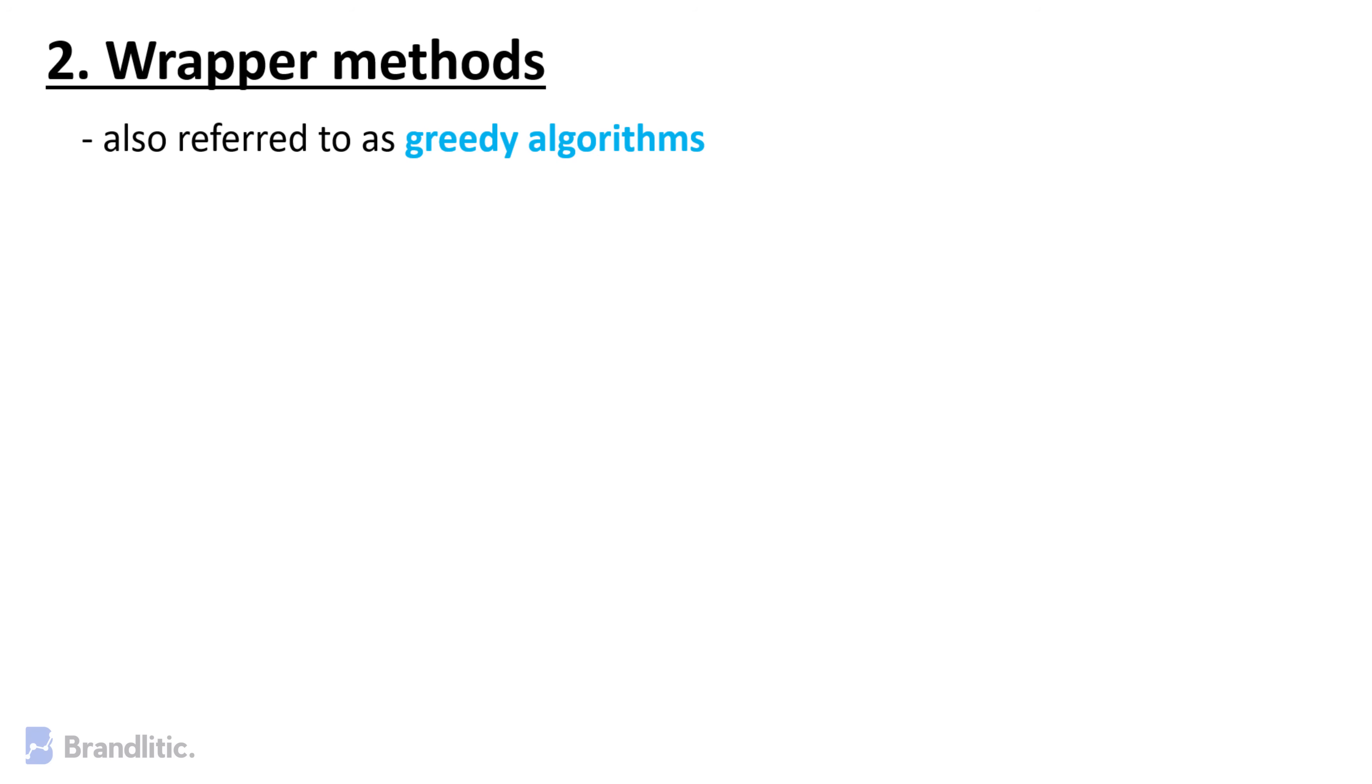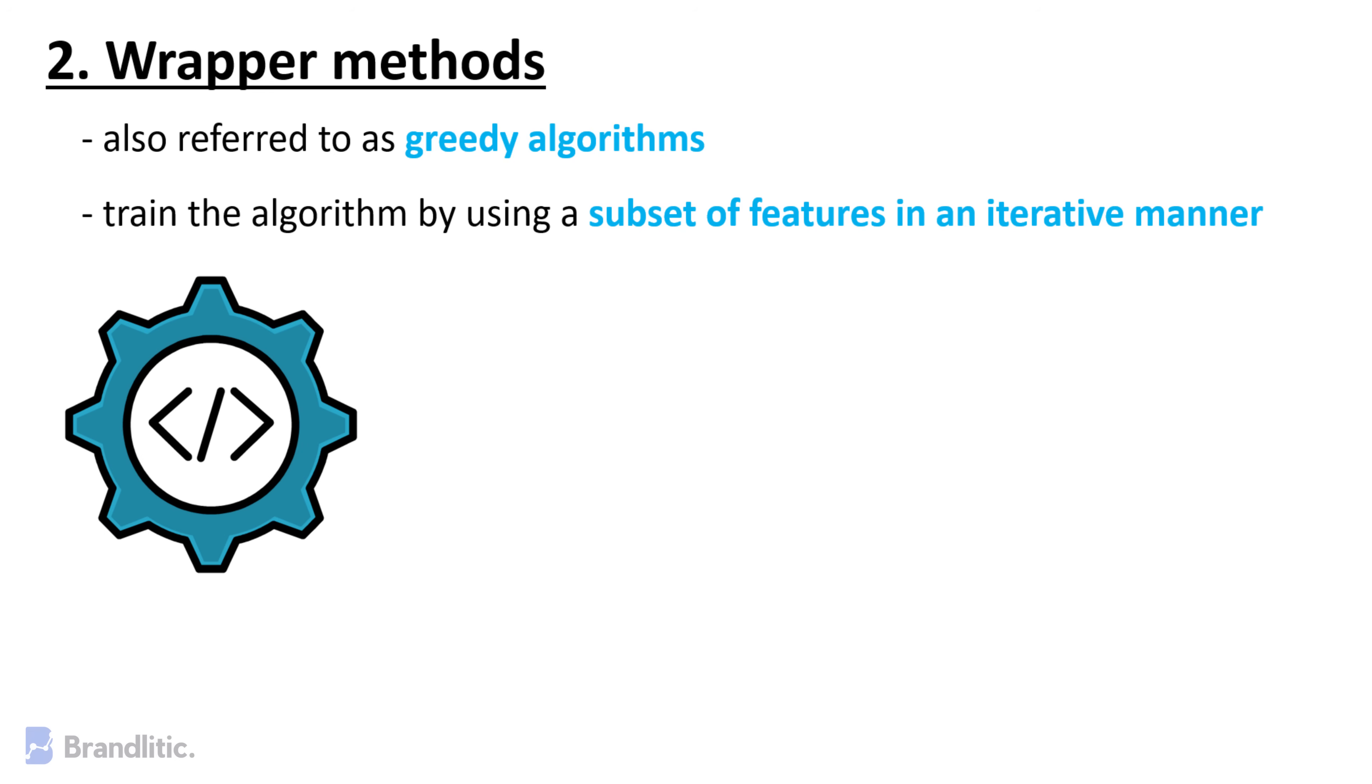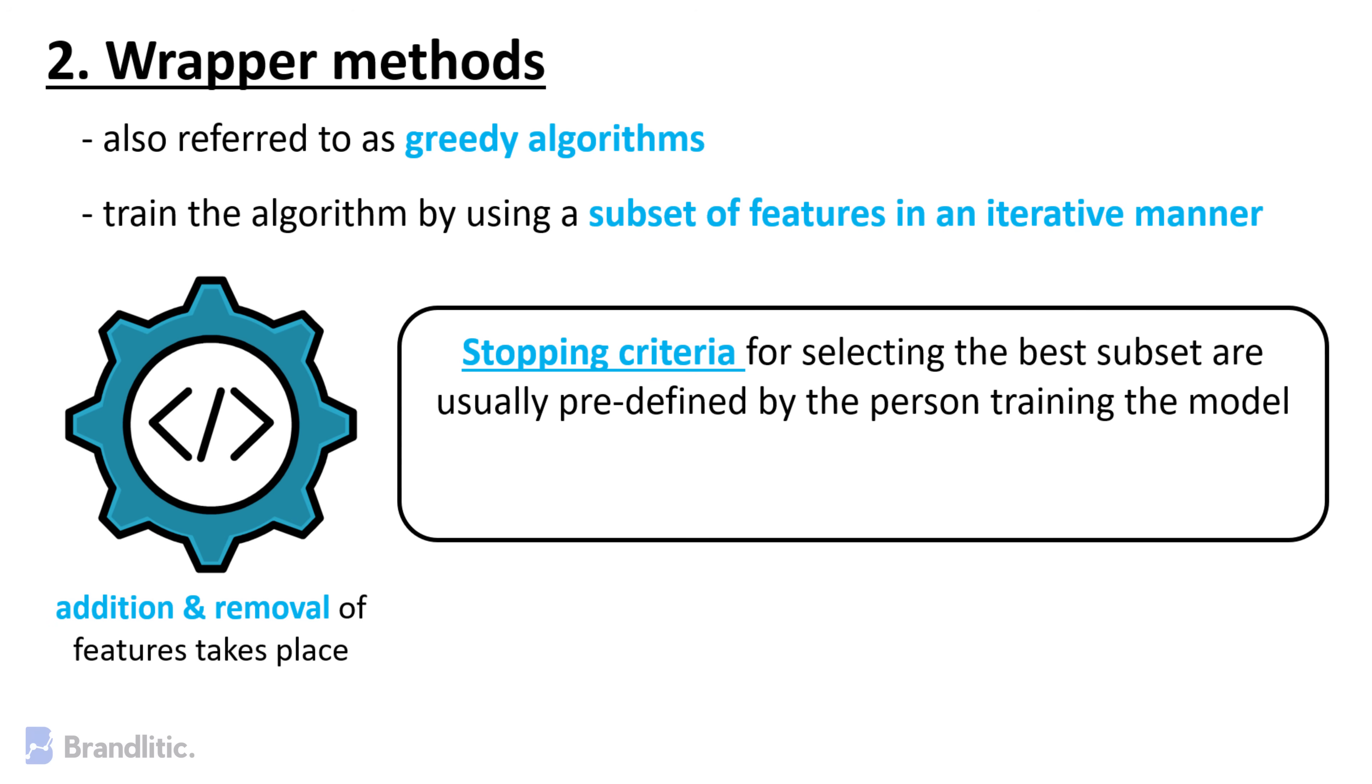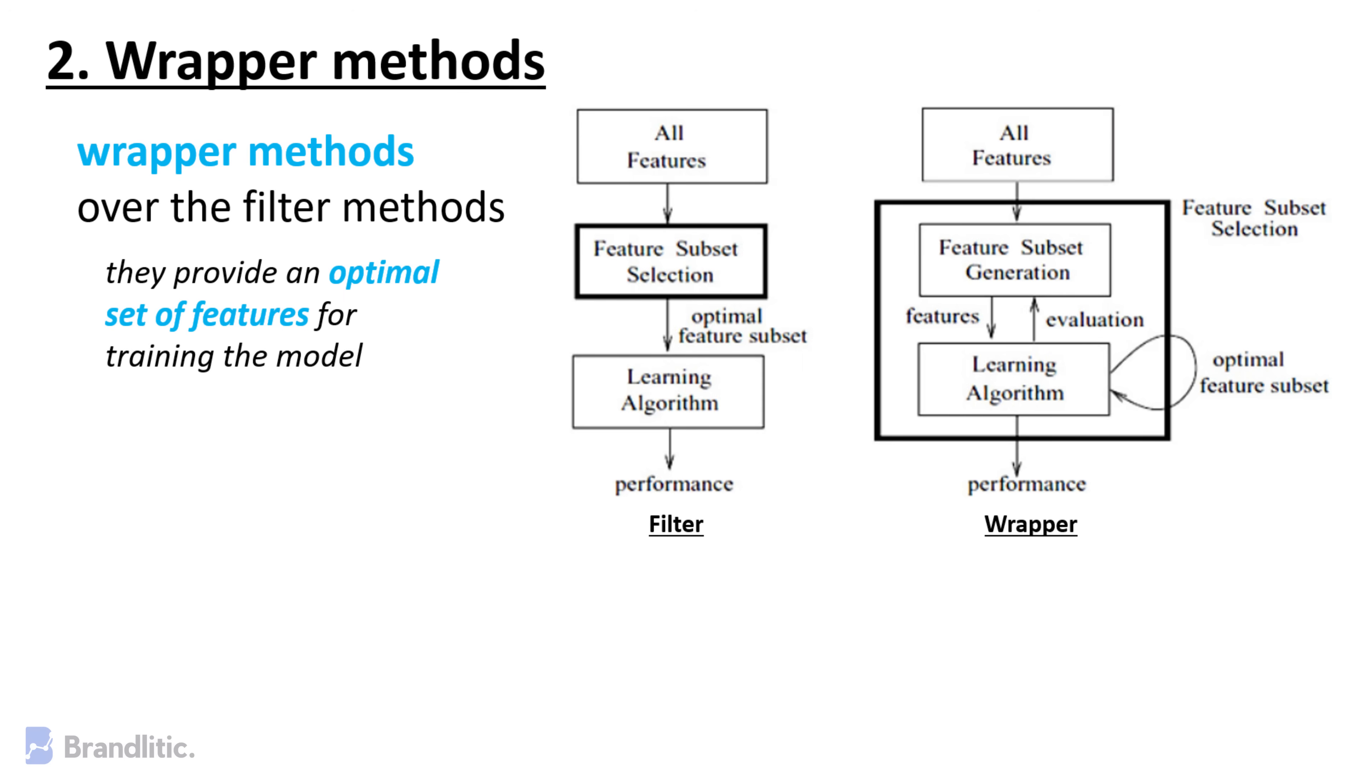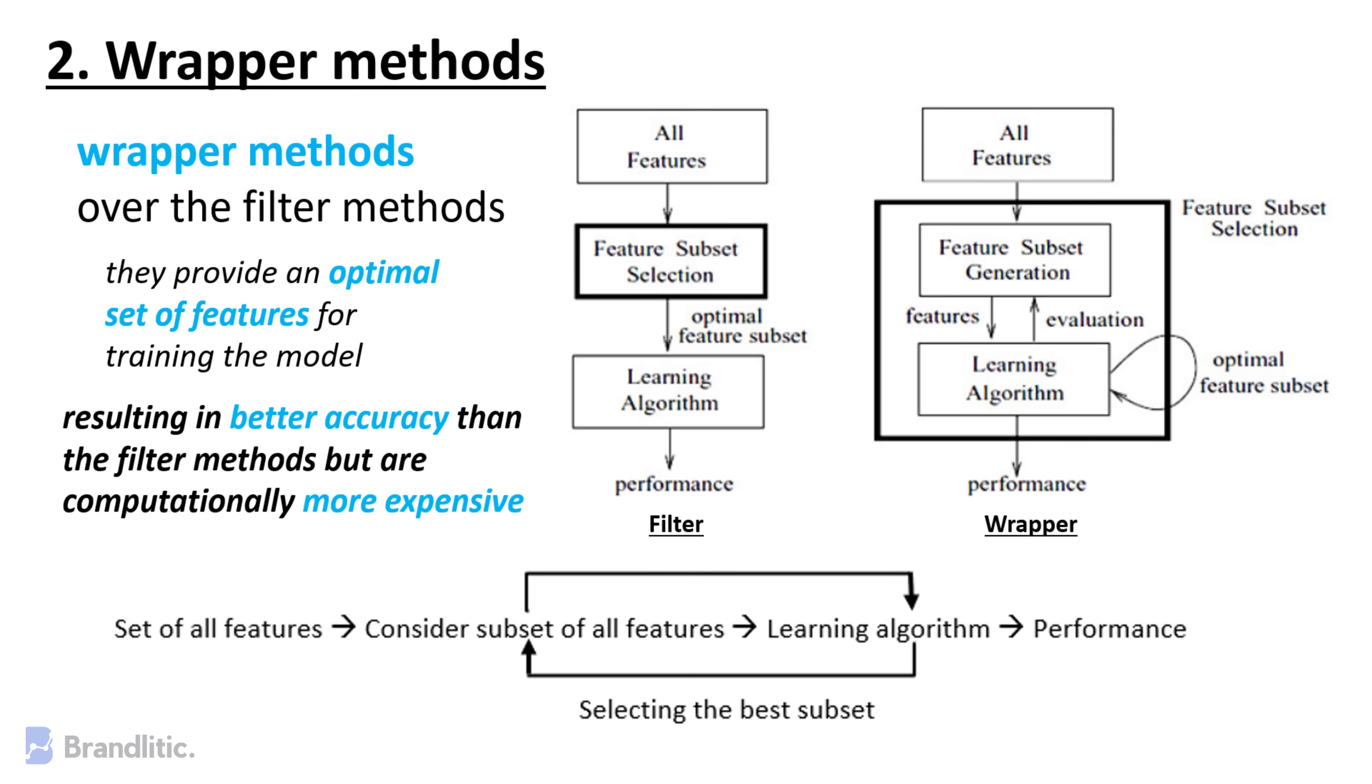Wrapper Methods. Wrapper Methods are also referred to as greedy algorithms. They train the algorithm by using a subset of features in an iterative manner based on the conclusions made from training in trial model, addition and removal of features. The stopping criteria for selecting the best subset are usually predefined by the person training the model such as when the performance of the model decreases or a specific number of features have been achieved. The main advantage of Wrapper Methods over Filter Methods is that they provide an optimal set of features for training the model, thus resulting in better accuracy than the Filter Methods but are computationally more expensive.